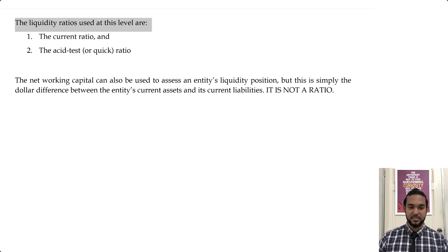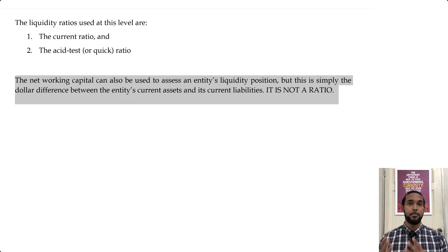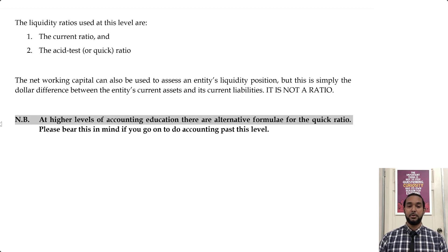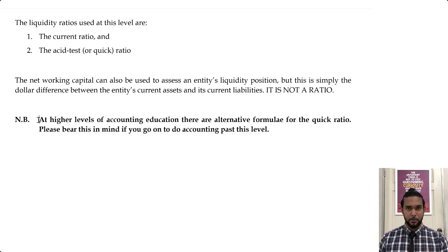At this level there are two liquidity ratios we use: the current ratio and the acid test or quick ratio. I've also seen in some texts the net working capital included, but net working capital is not a ratio — it's current assets minus current liabilities, which is a difference. A ratio is a comparison of proportions; if you're not dividing, there's no ratio. Also note that at higher levels of accounting education there are alternative formulas for the quick ratio, so be mindful of that.